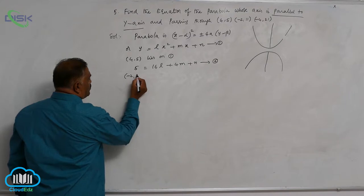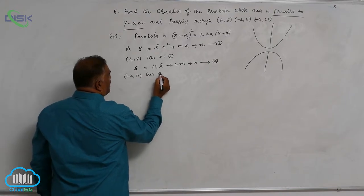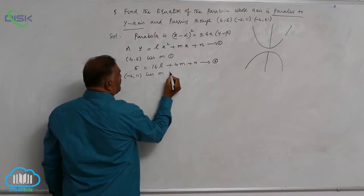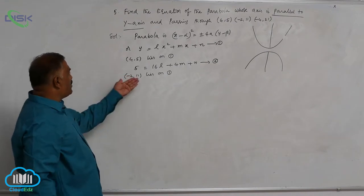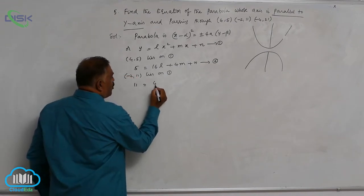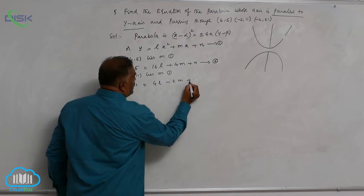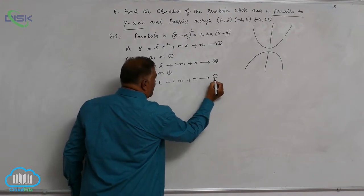Then comes (-2, 11) lies on equation 1. Now again you can say 11 is equal to 4l minus 2m plus n, this is equation 3.